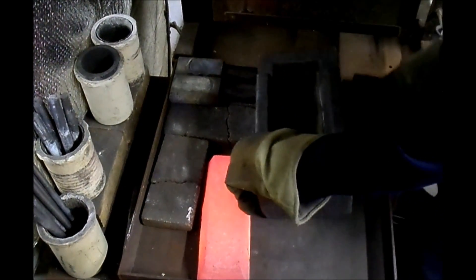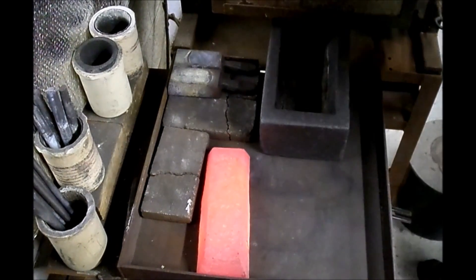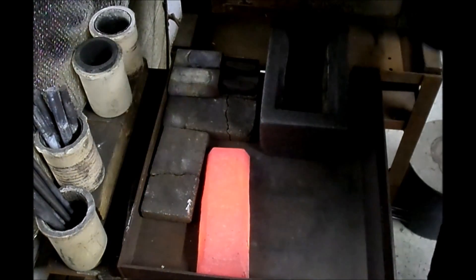Now that it's empty again, the ingot mold provides the perfect place to deposit the recovered silver that we'd loosened from the sides of the crucible.